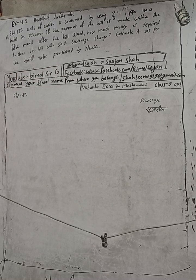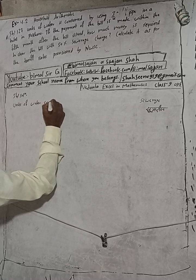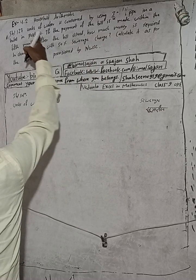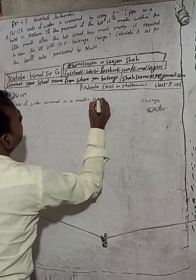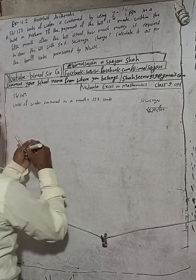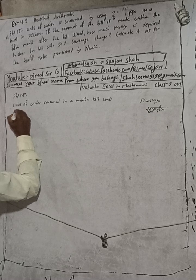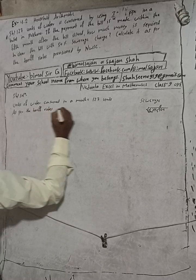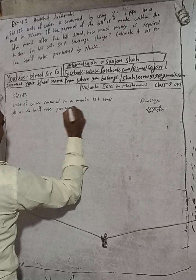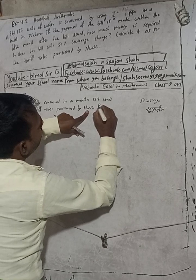So here, units of water consumed in a month — in a hotel in Pokhara — the one-month bill is 127 units. Now calculate it as per the tariff rates provision by NWSC.